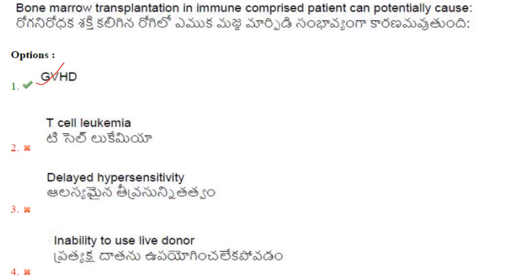Bone marrow transplantation in immunocompromised patients can potentially cause graft versus host disease (GVHD). This occurs when donor cells recognize the recipient cells as foreign and mount an immune attack that can be life-threatening. Immunocompromised means the immune system's defenses are low, affecting its ability to fight infection and disease. The answer is option 1: GVHD.